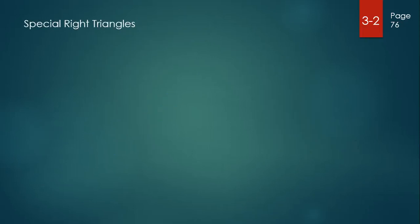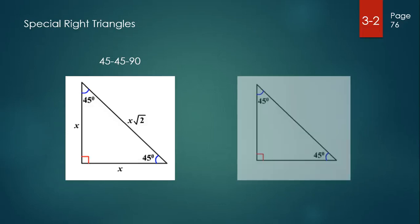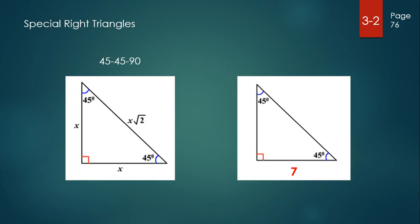There are two special right triangles we need to talk about. One is called a 45-45-90 triangle because it has two 45-degree angles and one 90-degree angle. What makes this special is the relationship between the lengths of the sides: the sides opposite the 45-degree angles will always be the same length, called x. The hypotenuse in a 45-45-90 triangle will always be x times the square root of two. For example, if one of the legs measures seven units, then both legs are seven units long, and the hypotenuse is seven times the square root of two units long.